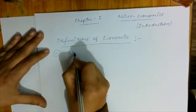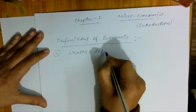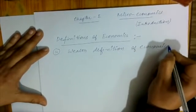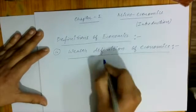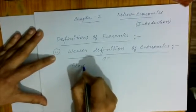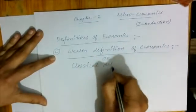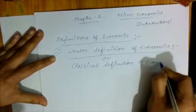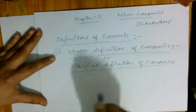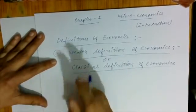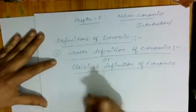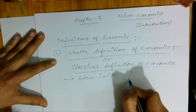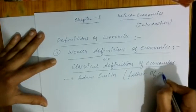The first definition is the Wealth Definition of Economics, also called the Classical Definition of Economics. We call it Classical because it is the first definition, and it was given by Adam Smith, who is known as the Father of Economics.